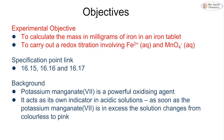Let's have a look at the first one, which is the reaction between iron and potassium manganate. The purpose of this experiment is to calculate the mass in milligrams of iron in an iron tablet. We do this by carrying out a redox titration involving iron(II) ions and manganate ions. Potassium manganate(VII) is a powerful oxidizing agent and it also acts as its own indicator in acidic solutions — as soon as the potassium manganate is in excess we get a color change from colorless to pink, making it a self-indicating titration.